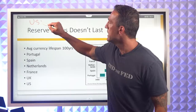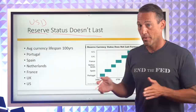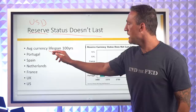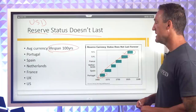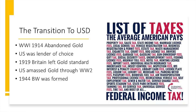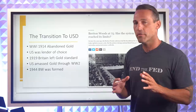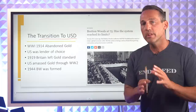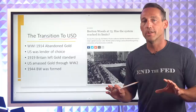The US dollar is the reserve currency of the world right now. However, reserve currency status doesn't last — it's never lasted throughout history. The average lifespan of a currency is about 100 years. We had Portugal, Spain, Netherlands, France, the UK — and here we are with the United States having that reserve currency status. And as you might guess, we're at about that 100-year mark today.